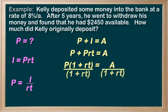And now we can see that if we divided both sides by 1 plus RT, it cancels on the left, and on the right we have A over 1 plus RT. So we have an equation for our principal P, and we can plug in our numbers.